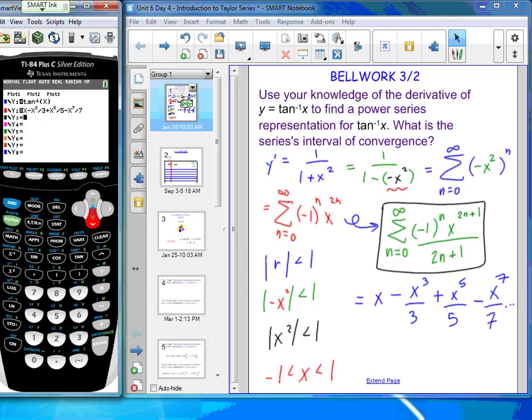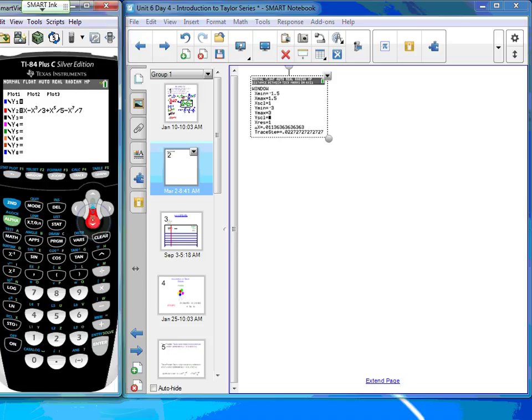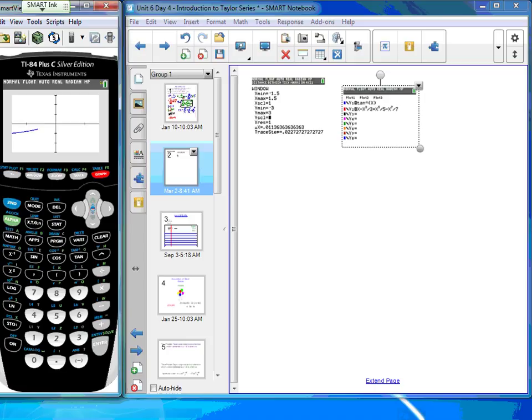So what would be an appropriate window? Well, algebraically we've determined that our interval of convergence should be in between negative 1 and 1 without examining the endpoints at this stage. So I'm going to go ahead and go negative 1.5 to 1.5. And my y window I'm going to go negative 3 to 3. So here comes inverse tangent in the blue line style. And now comes the 4th partial sum. If we've done a good job we should see them sharing in between negative 1 and 1, and by golly, by the 4th partial sum it appears as though we already have a good representation of my function.